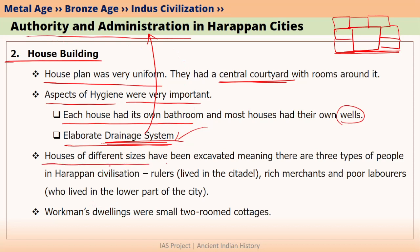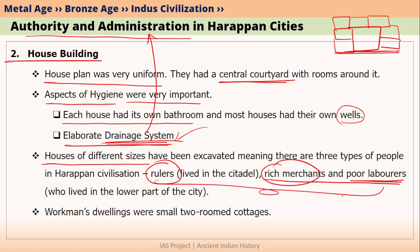Moreover, there was some kind of political and economic stratification within Harappan society. Political stratification means there were rulers and other people who were not rulers. Economic stratification means there were rich people and mainly poor laborers. All three types of people had houses of different sizes, and such a system continued for hundreds of years. This means political and economic stratification was stably maintained by some kind of administration in Harappan cities.